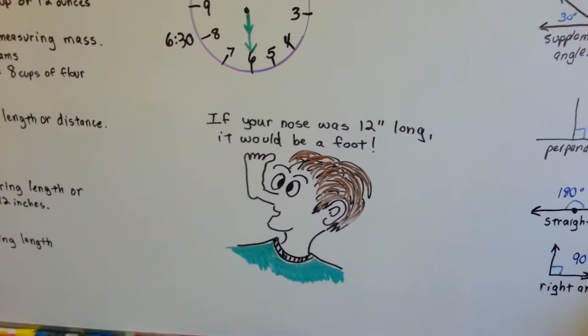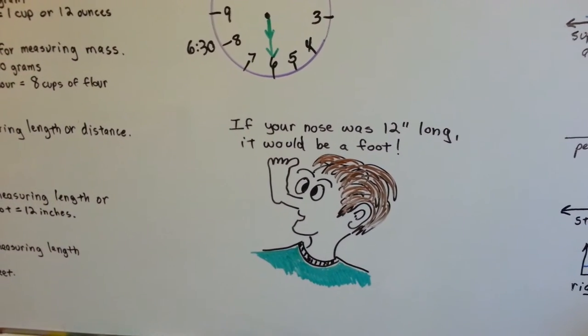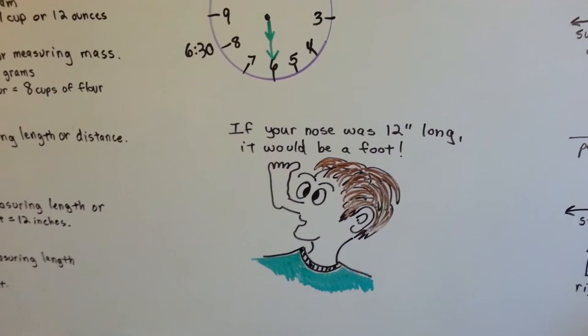If your nose was 12 inches long, it would be a foot. So, that's how you remember how long a foot and an inch is. If your nose was 12 inches long, it would be a foot.